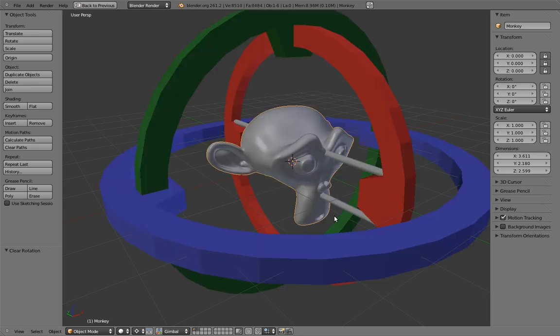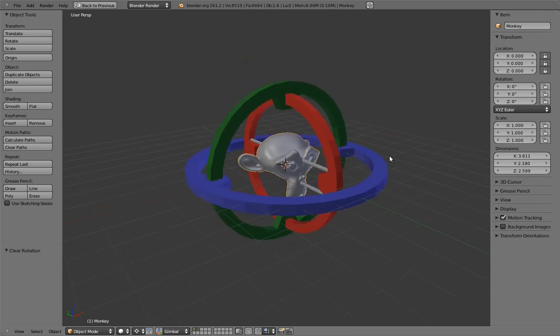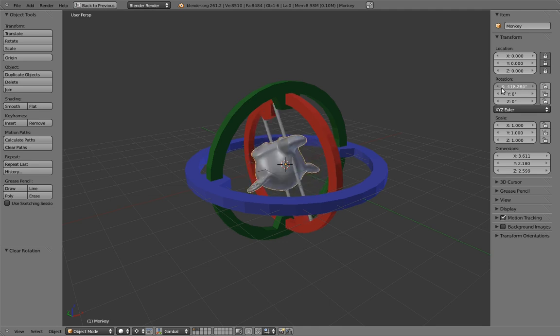To help illustrate why this is, I've created a weird-looking device here. As you can see, we have three rings, each smaller than the last, with the monkey head in the middle. Each ring represents one of our Euler rotation axes. The innermost one is the x-axis, the mid-sized one is the y-axis, and the outermost one is the z-axis. Now, let's play with these axes individually. Playing with the x-axis, we can see the innermost ring rotate.